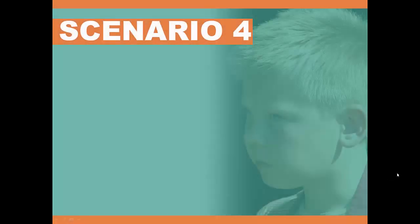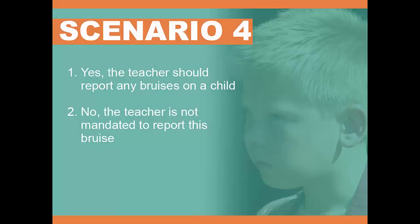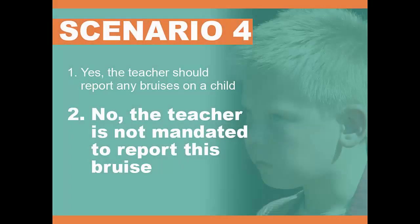Scenario 4: Billy arrives for Sunday school with a nasty bruise on his forehead. He withdraws when the teacher tries to touch his face to get a better look. While he says it hurts, he won't talk about it. His mother explains that her son fell from the kitchen counter trying to get into the cookie jar, and he is embarrassed and feels guilty by his actions. Is the Sunday school teacher mandated to report this? Option 1: Yes, the teacher should report any bruises on a child. Option 2: No, the teacher is not mandated to report this bruise — the teacher knows Billy and believes he likely did fall from the kitchen counter. Option 2 is correct. The teacher knows Billy and believes he likely did fall from the kitchen counter.